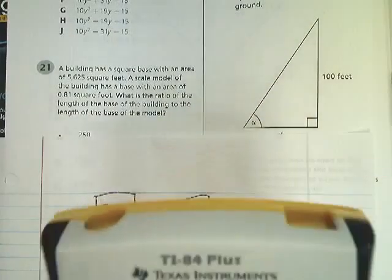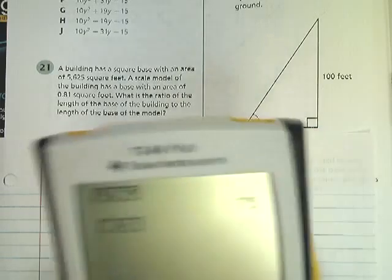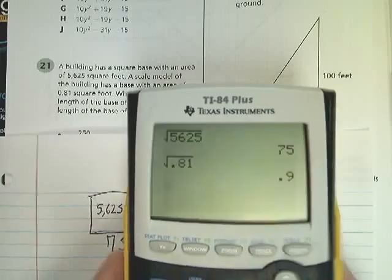I can do the same thing for 0.81, square root of 0.81. I don't know why I felt like I needed to do that. And it gives me 0.9.